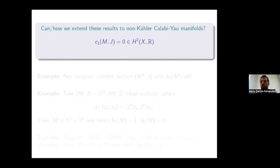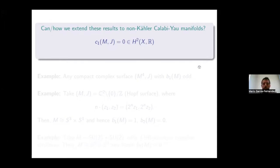The main point of my talk is: how can we extend this to the case of non-Kähler Calabi-Yau manifolds? What happens when my complex manifold is compact but non-Kähler? For me, Calabi-Yau simply means the first Chern class vanishes in de Rham cohomology — that's the simple definition I'll take.